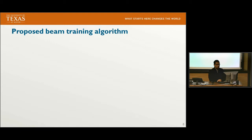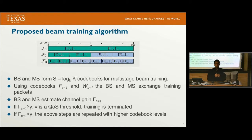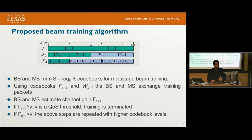Moving to the proposed training algorithm: the algorithm is opportunistic in the sense that training is terminated once a quality of service threshold is satisfied — we don't need to always look for the best beam, which makes it suitable for delay-sensitive applications. Same as hierarchical beamforming, the whole angular space is divided into sectors and beam training is performed in several stages. At the beginning, the base station and the mobile station form S = log_B(K) codebooks for multi-stage beam training, where K is the total number of beam directions and B is the number of search sectors per stage.